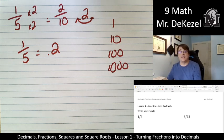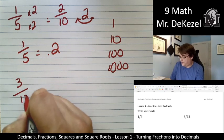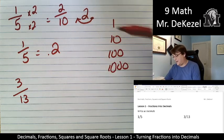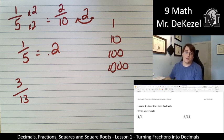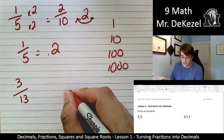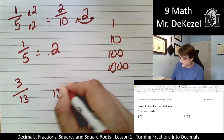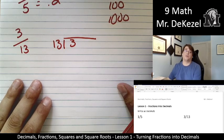If we look at the next example, we have 3 out of 13. And that's a little bit trickier. You cannot easily turn that bottom number, the denominator, into one of these four numbers. So you're going to have to long divide. You're going to do long division this time. It is 13 on the outside and 3 on the inside of the box.